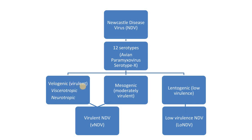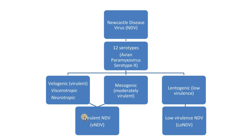There is the velogenic, most virulent type, and it's subdivided into viscerotropic or neurotropic. Viscerotropic affects the gastrointestinal tract and causes hemorrhage and necrosis, and the neurotropic causes necrosis in the central nervous system as well as respiratory disease. The mesogenic group has moderate virulence, and lentogenic are either low virulent or not virulent at all. Most recently, these three groups have been subdivided into just two main groups: either virulent Newcastle disease virus or low virulence Newcastle disease virus.